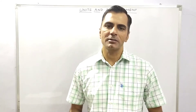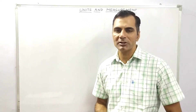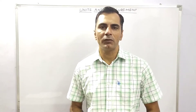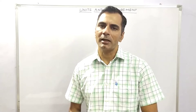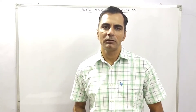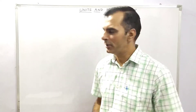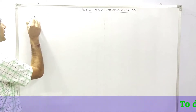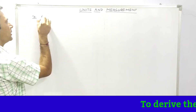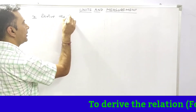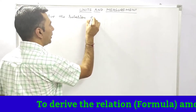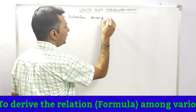Hello students. In continuation of chapter Units and Measurement, we are going to discuss the third application of dimensional analysis. We have already studied two applications: first is conversion of one system of units to another, and second is checking the correctness of a physical formula or equation. The third application of dimensional analysis is to derive the relation among various physical quantities.